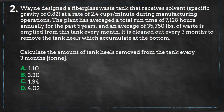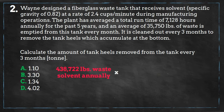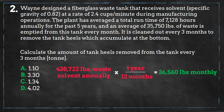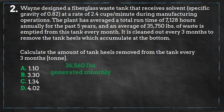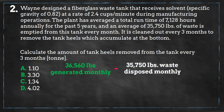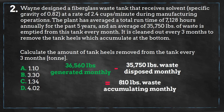We'll divide the amount of waste generated annually by 12 months, and we'll get the amount that we generate monthly, which is 36,560 pounds. Now we can easily subtract the amount of waste that we dispose of monthly from the amount that we generate, and we get an answer of 810 pounds of waste that accumulate each month.